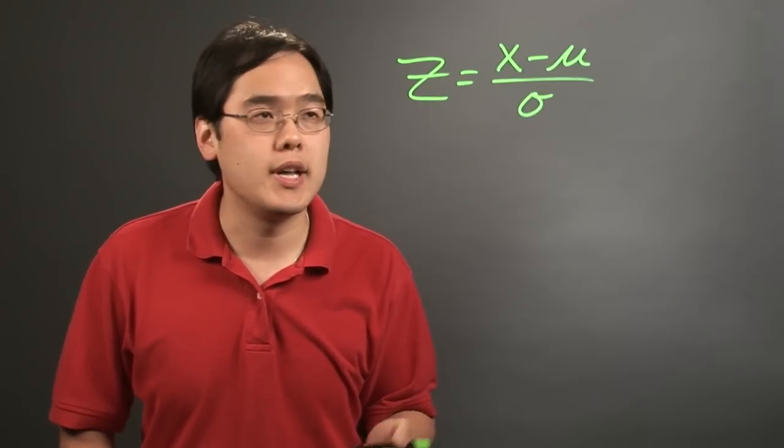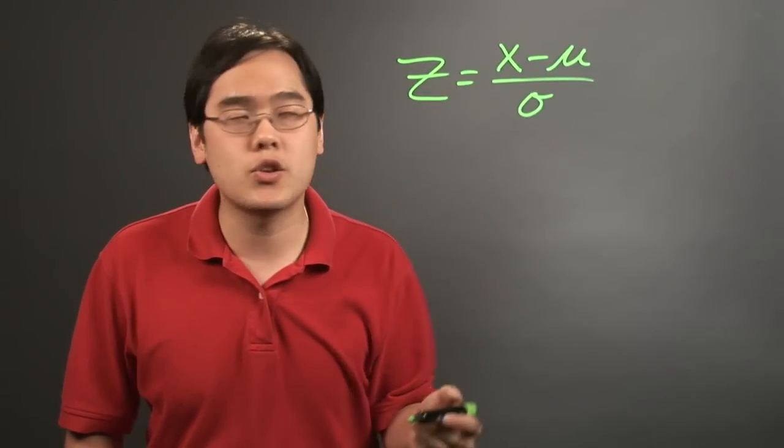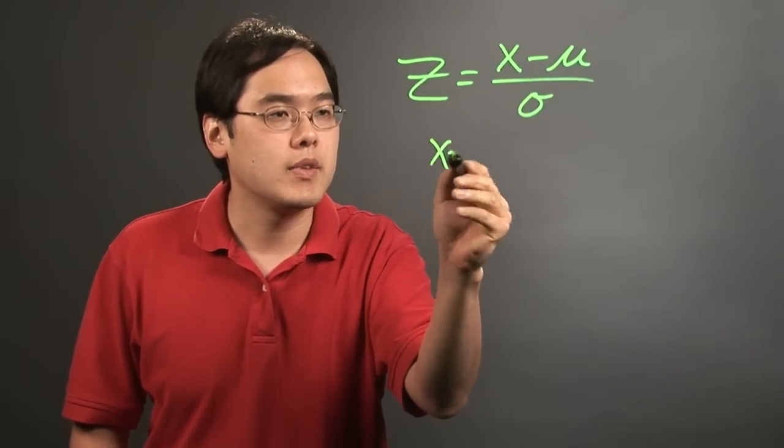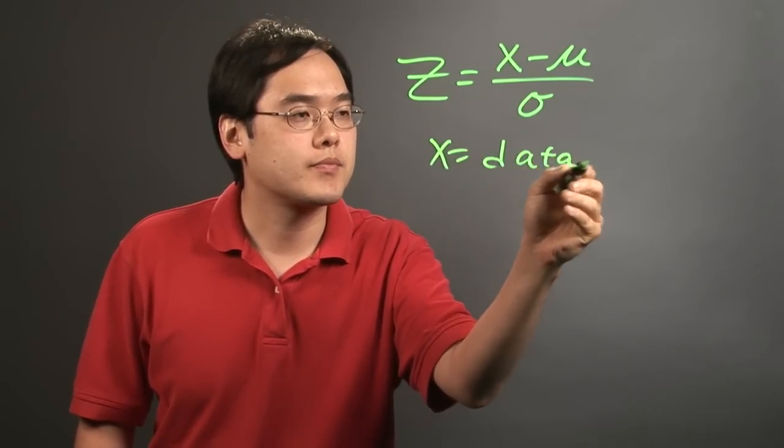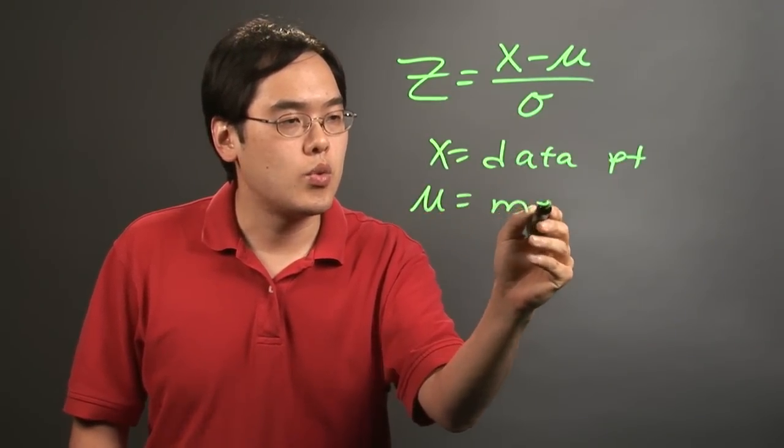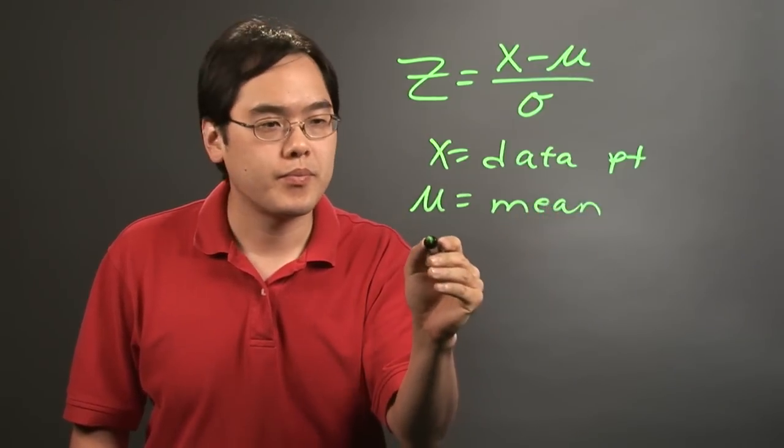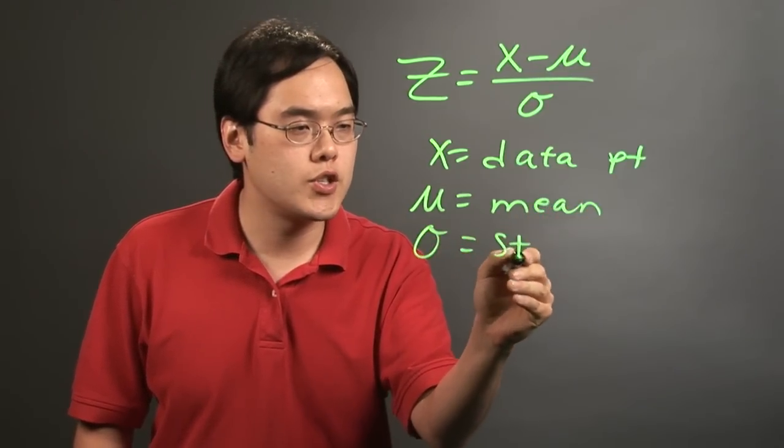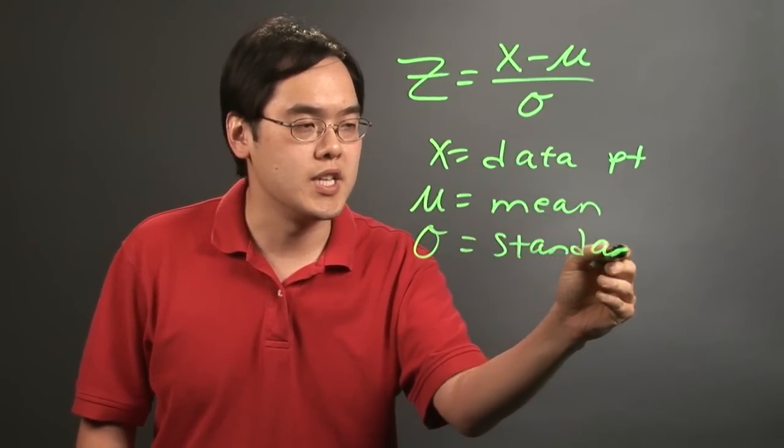Let me just break it down to you a little bit as to what that means. Z refers to the z-score, x is the data point, mu refers to the mean, and sigma refers to the standard deviation.